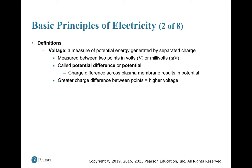We need some definitions to help us understand these concepts. The first is voltage — that potential energy generated by separating charges. The difference between two sides of the membrane is called voltage, measured at two points: outside and inside. Volts would be a very large unit for biology, so we use millivolts. It's the potential difference — the charge difference across the plasma membrane. The greater the charge difference between those two points, the higher the voltage.